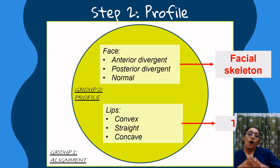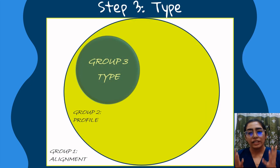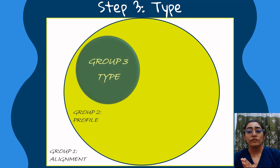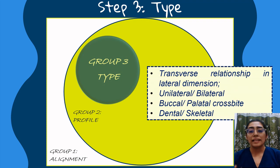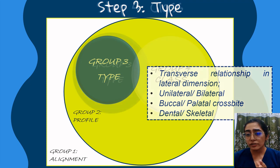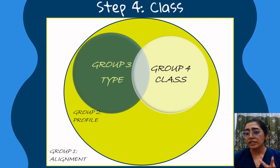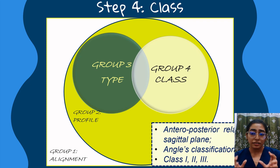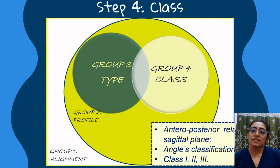The third step is the description of the type, or transverse relationship in the lateral dimensions. The arch can have a unilateral or bilateral buccal or palatal crossbite, which may have an underlying skeletal or dental discrepancy. The fourth step involves describing the sagittal relation, or the anterior-posterior relationship in the sagittal dimension — the term 'class' is used for this — and it can be classified using Angle's classification into Class 1, 2, or 3.